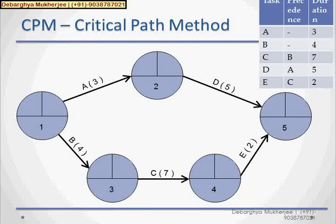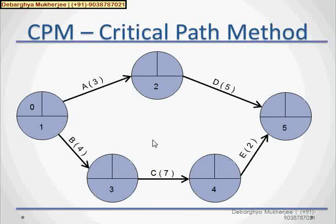Now, how to solve the critical path method. Now, we will first put a 0 there because it is the starting node. So, no delay or nothing will hamper to start it. So, that is why we will put 0 over there.